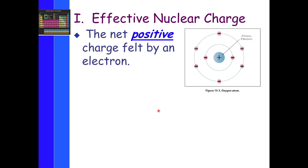The effective nuclear charge is the positive charge that is felt by the electron — that's the best way to describe it. It's what an electron feels. The negative charge of the electron is going to be attracted to the positive charge in the nucleus.